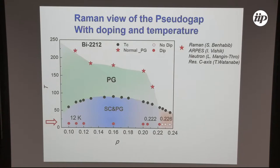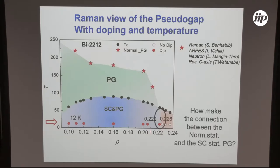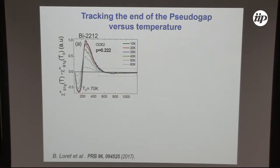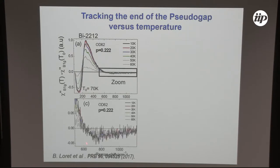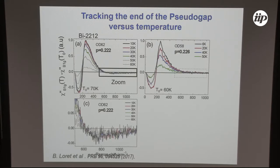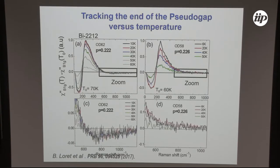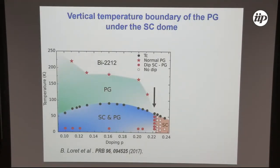To make the connection between the normal-state pseudogap and the superconducting-state pseudogap, we performed Raman measurements as a function of temperature on both sides of the doping where the dip disappears. Looking carefully at the right energy side of the pair-breaking peak, at lower doping we can see a dip that persists up to TC — it never disappears. At 22.6% doping, we see no dip on the right energy side. This means the disappearance of the pseudogap is very sharp; it collapses very abruptly inside the superconducting state.